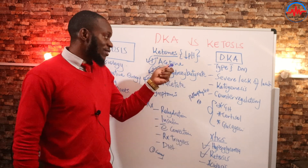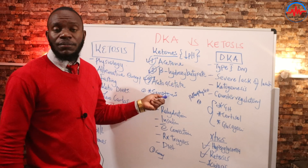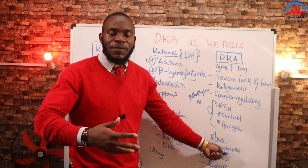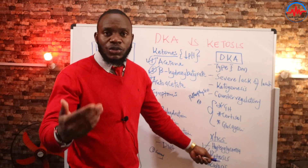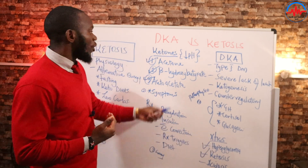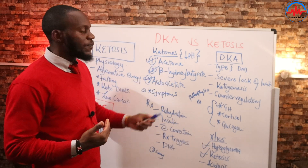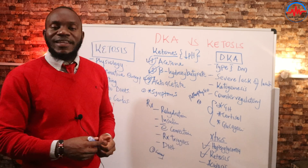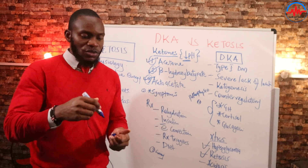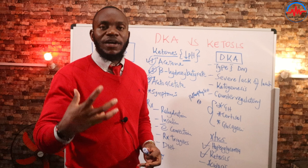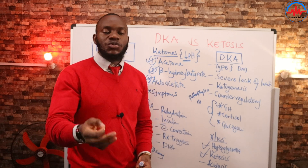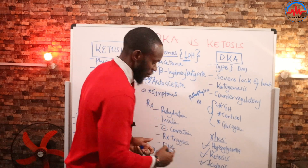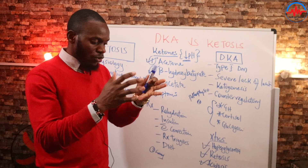Remember, ketone bodies are very helpful to you. However, in this case we don't need them — we have hyperglycemia, so we needed to break down glucose to give you ATP, but we are not doing that because we don't have insulin. We are breaking down fat to get these three ketone bodies that are rising in your bloodstream, and these ketone bodies are highly acidic — they lower the pH of blood. Once they lower the pH of blood, the physiology of blood becomes acidic, and that is what we call acidosis.